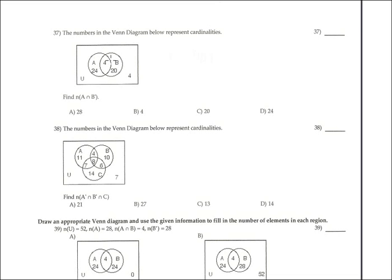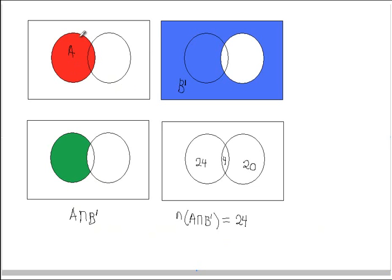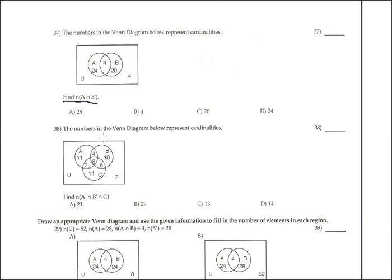Problem 37: find the cardinality of A∩B'. In the Venn diagram, A is shown in red and B complement is in blue. Their intersection — the common part between these two regions — is the green part. Specifically in the Venn diagram, that region contains 24 elements. The answer for problem 37 is 24.